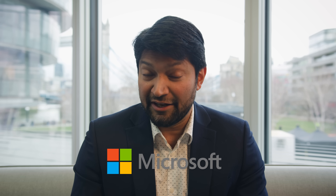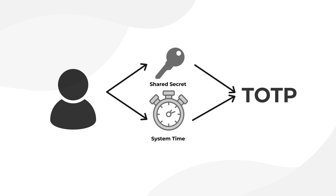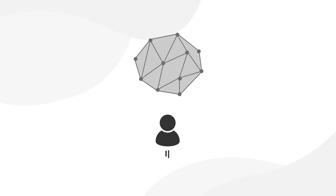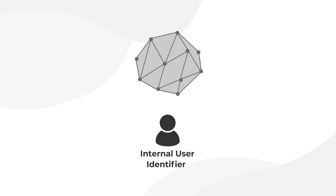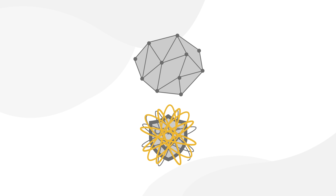This is the same technology used by Google and Microsoft Authenticator. On the client side, we first generate a TOTP using the shared secret and the system time. Then our proprietary algorithm injects and mixes the user identifier into the TOTP, which results in an OTAC.